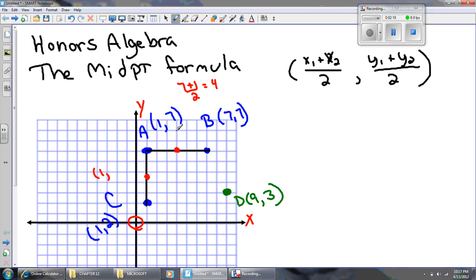The x-coordinate is going to be 1. The y-coordinates are 2 and 7. If I average 2 and 7, what do I get?